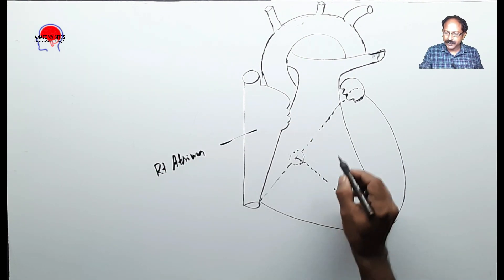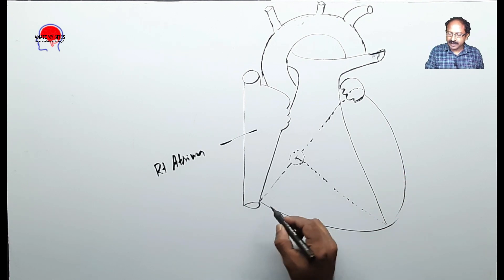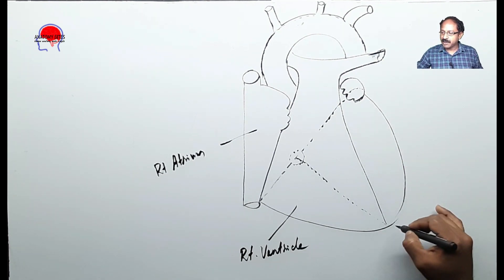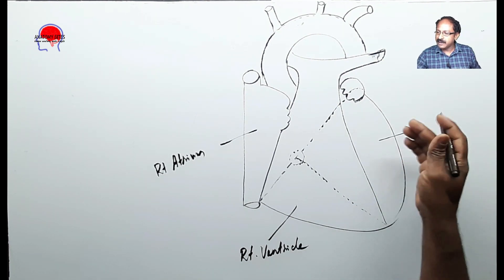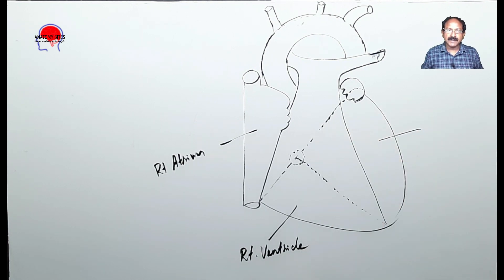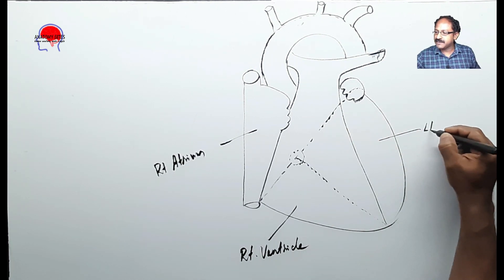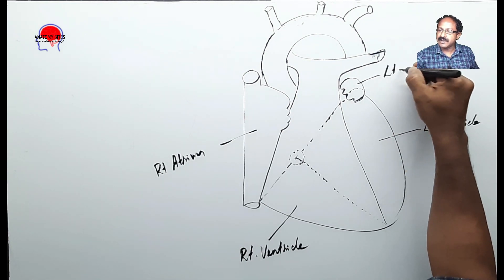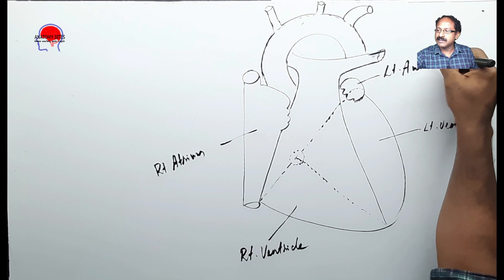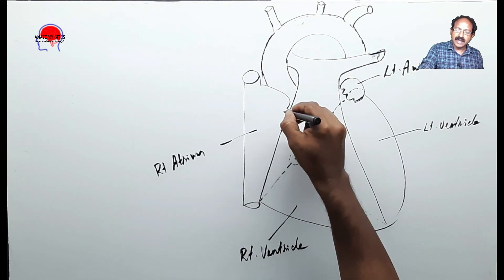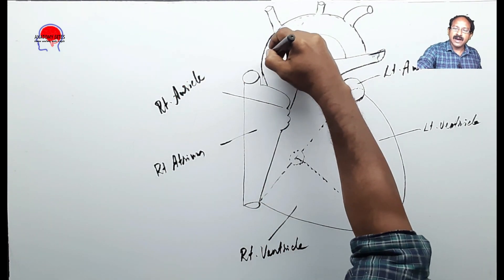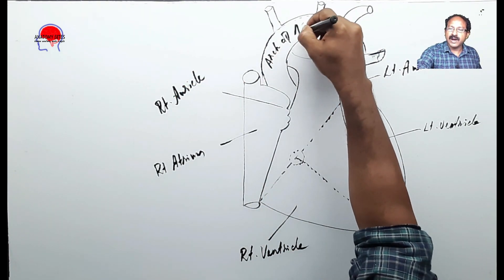Here is the right atrium. This entire lower portion is the right ventricle. Here is the part of the left ventricle — some of the left ventricle is also behind. This is the left ventricle, here is the left auricle, and this part is the right auricle. This is the arch of aorta.